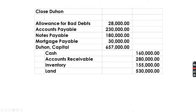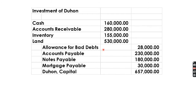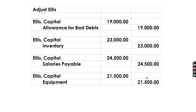After the adjusting and closing entries, the adjusted capital balance of Duhon is 657,000. This amount will be invested in the books of the partnership — the items closed in Duhon's books will be recorded as his capital investment of 657,000.